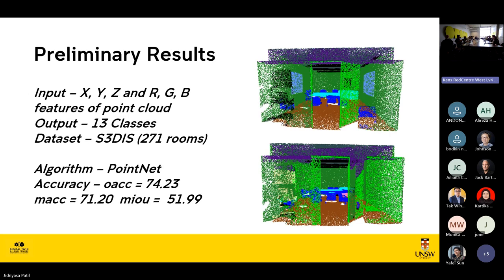Here we have some preliminary results. The top image is the ground truth and the bottom is the predicted image. We used input features of XYZ and RGB from the point cloud, with 13 output classes, using the Stanford 3D dataset available online. The model used here was PointNet. You can see in the predicted image a green patch in the bottom right that is supposed to be a wall but is detected as a door, because light green represents doors. This shows the errors currently present in deep learning algorithms.